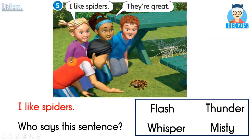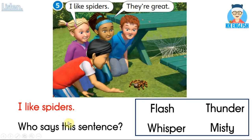Number five: Misty says 'I like spiders.' Misty说了我喜欢蜘蛛。Flash says 'They are great!' 他们好棒哦。I like spiders — 谁说了这句话？是Flash、还是Whisper、or Thunder、or Misty? The answer is Misty.